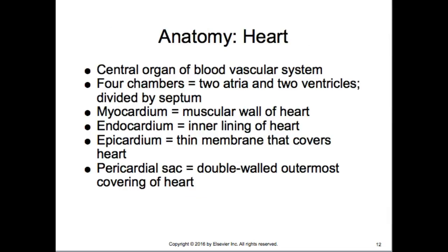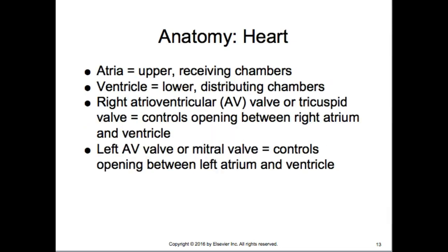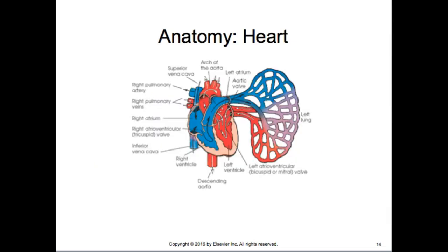The heart is the central organ of the blood vascular system. It has four chambers — two atria and two ventricles — divided by a septum. There is the myocardium, endocardium, epicardium, and pericardial sac. The atria are the upper receiving chambers; the ventricles are the lower distributing chambers. The right AV valve is the tricuspid valve; the left AV valve is the mitral valve.